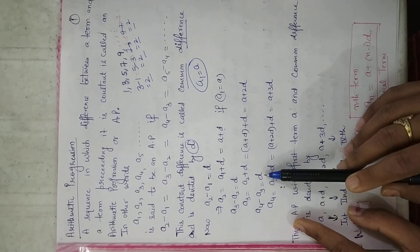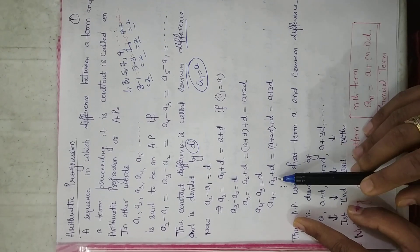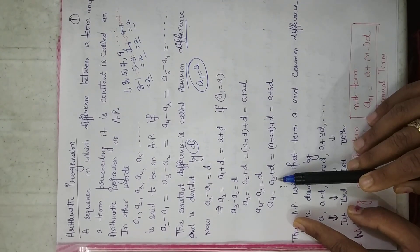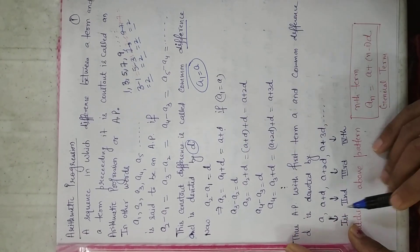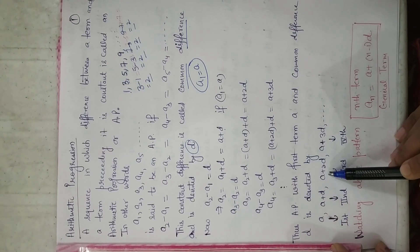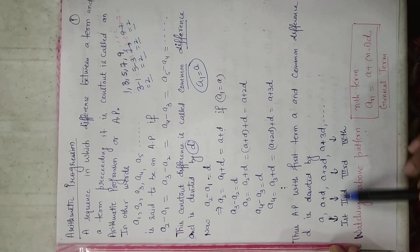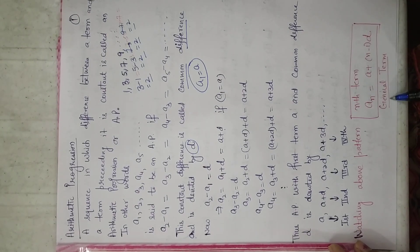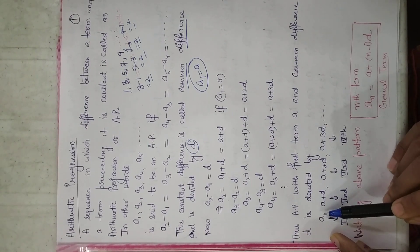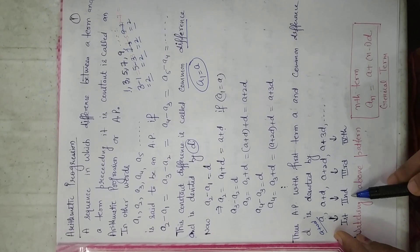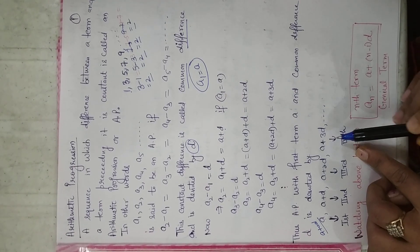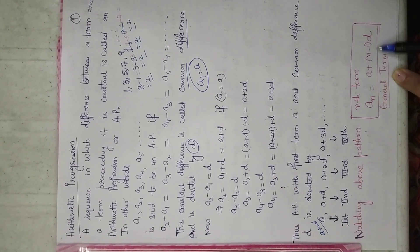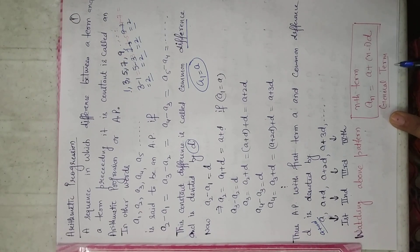Similarly, a4 minus a3 is also equal to d, so a4 equals a3 plus d. Since a3 is a plus 2d, substituting gives a plus 2d plus d, which is a plus 3d. Using this pattern: first term is a, second term is a plus d, third term is a plus 2d, fourth term is a plus 3d. So the nth term, also called the general term, is denoted by an equals a plus (n minus 1)d.